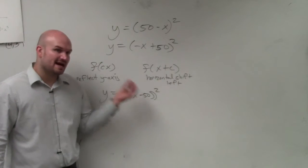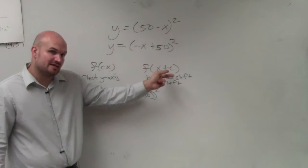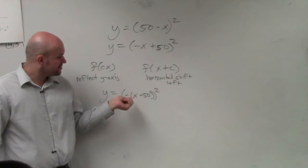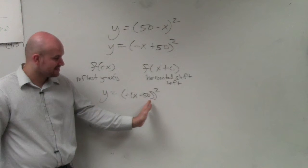We need to factor that out because it's c times all of x, even if x is added or subtracted from another, from a number. So therefore, you need to factor out that negative, so it's a negative times x.